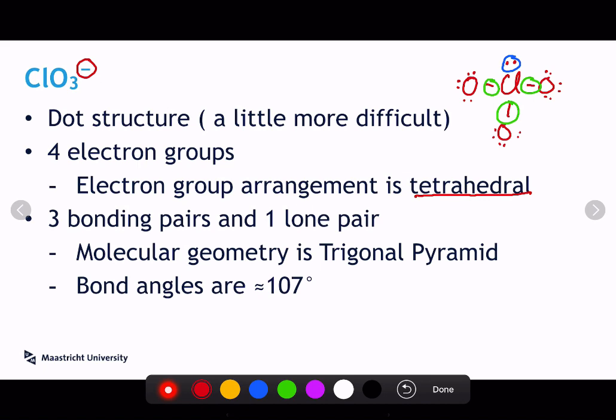Now when we're looking at the molecular geometry, we need to refer to the table. And we see that we've got three bonding pairs in green, and we've got one lone pair that's up there circled in blue.